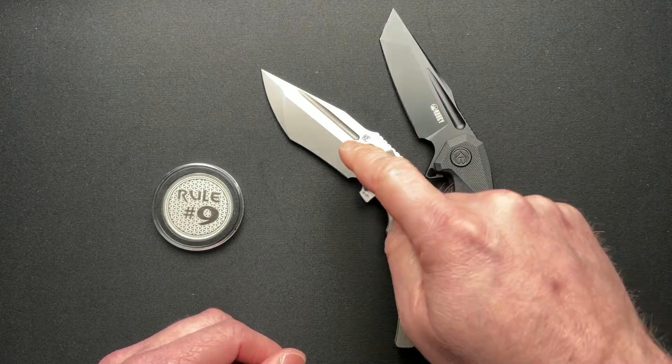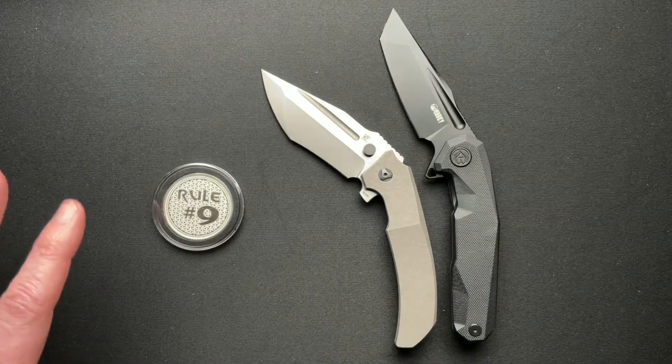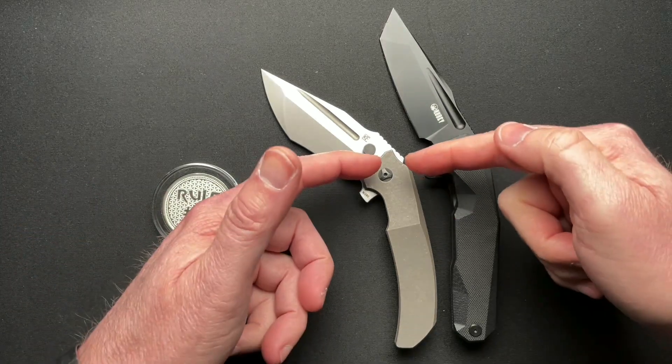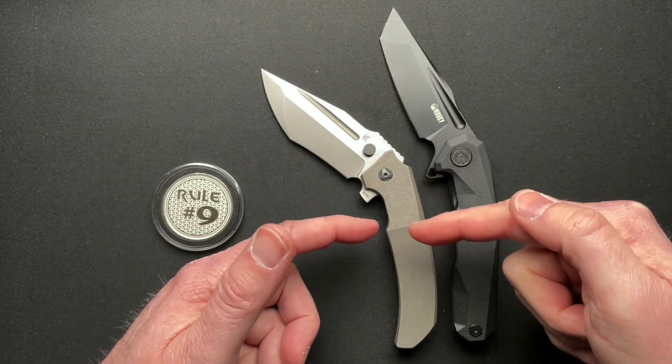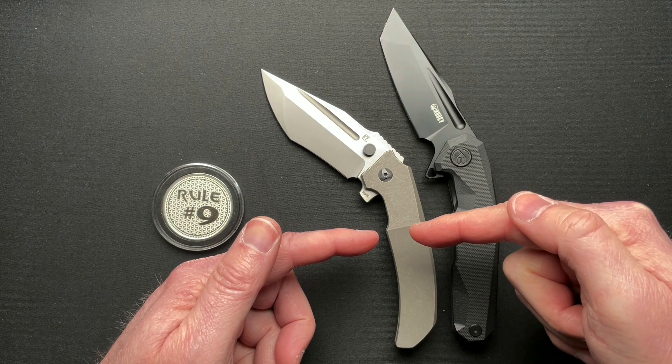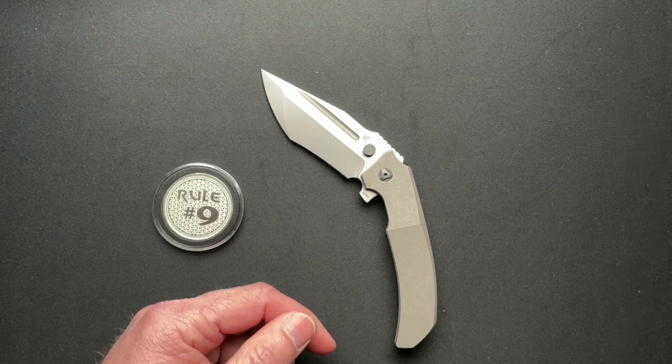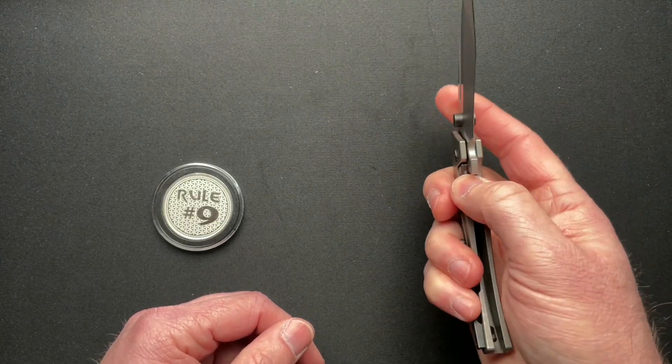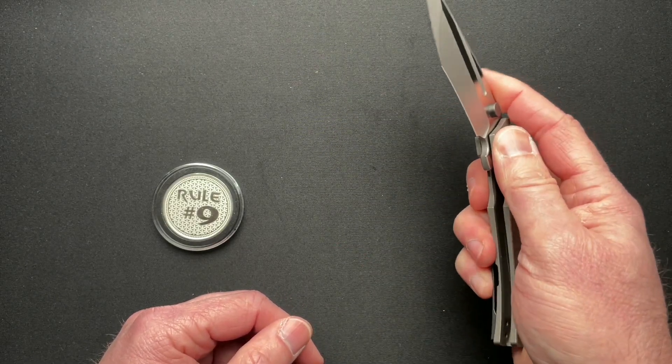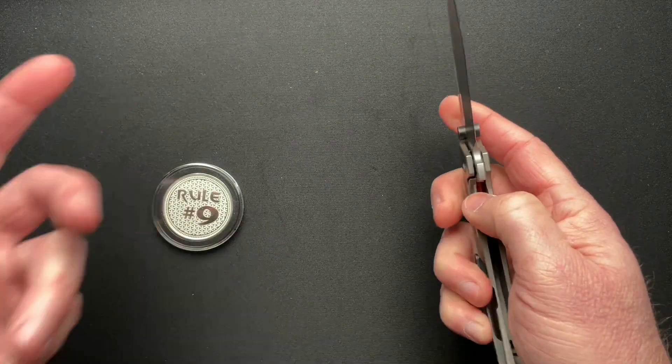So the detent on this one works phenomenally, don't get me wrong there, but it's a little farther back on the lock bar. So when you go to close it, you think you're past the detent here, and then you go to close it and you're not. But that's what I have found.